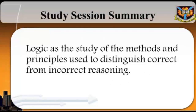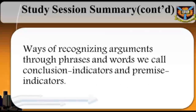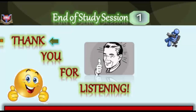Study Session Summary: In this study session, we looked at the basic concepts most central to this course — arguments and critical thinking — such as logic, propositions, and arguments. We defined logic as a study of the methods and principles used to distinguish correct from incorrect reasoning. We gave an account of propositions and distinguished them from the sentences in which they may be expressed. We also gave an account of the concept of an argument, and defined an argument as a cluster of propositions of which one is the conclusion and the others are premises offered in its support. Finally, we looked at ways of recognizing arguments through phrases and words we call conclusion indicators and premise indicators. End of Study Session 1. Thank you for listening.